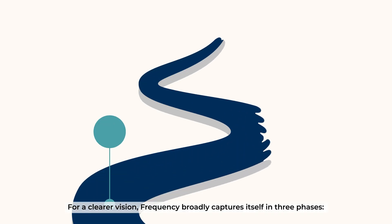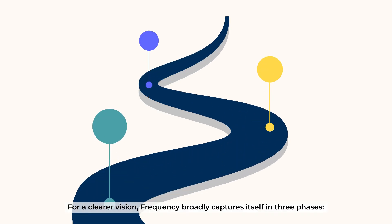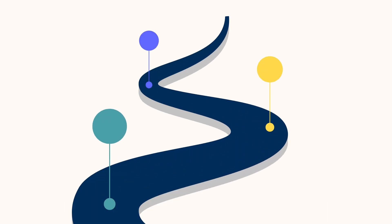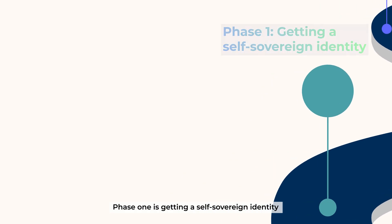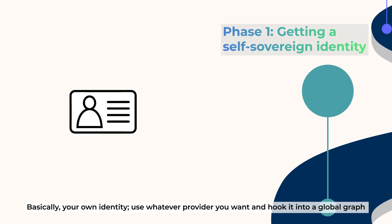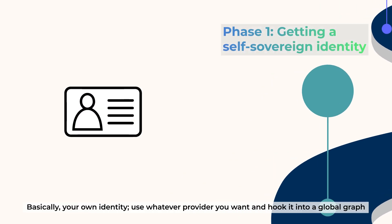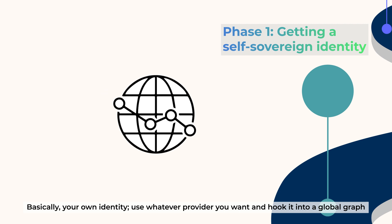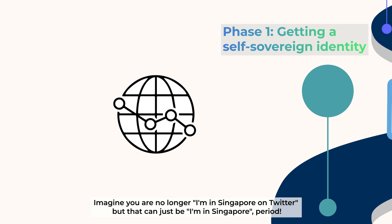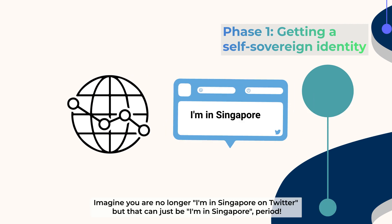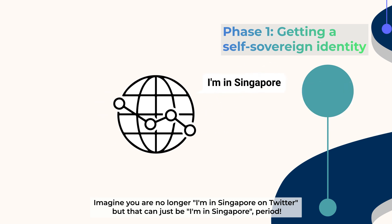For a clearer vision, Frequency proudly captures itself in three phases. Phase 1 is getting a self-sovereign identity — basically your own identity. Use whatever provider you want and hook it into the global graph. Imagine you are no longer "I am in Singapore on Twitter," but that can just be "I am in Singapore," period.